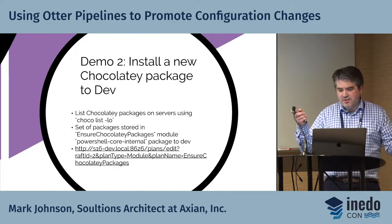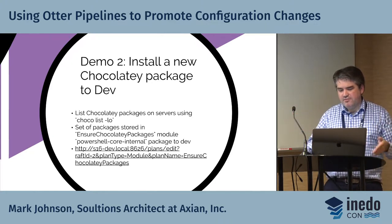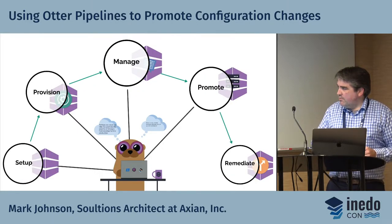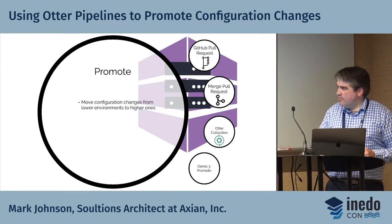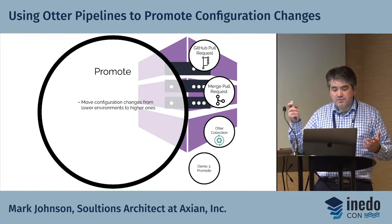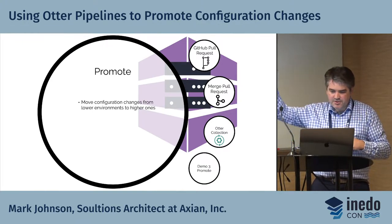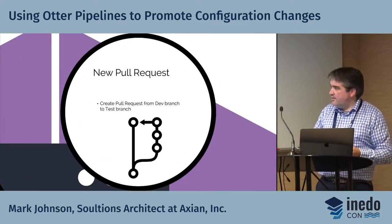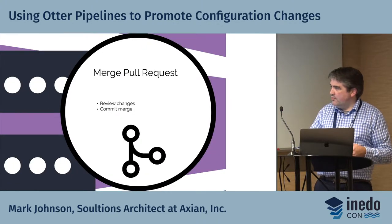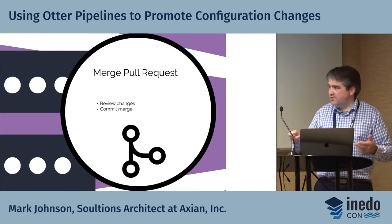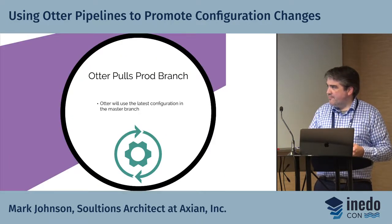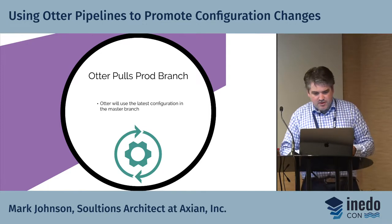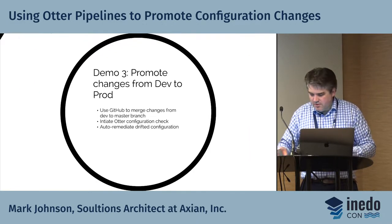We've already basically done this — installed a new Chocolatey package in dev. We can short-circuit the demo to promotion. We want to move configuration changes from lower environments to higher environments: dev to test to stage to production. As you saw, it was a pull request from dev to test, then we review the changes, commit the merge, and then Otter will pull the appropriate branch. Let's go ahead and look at that — going from dev to stage.